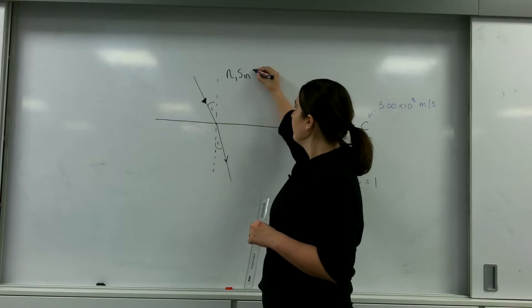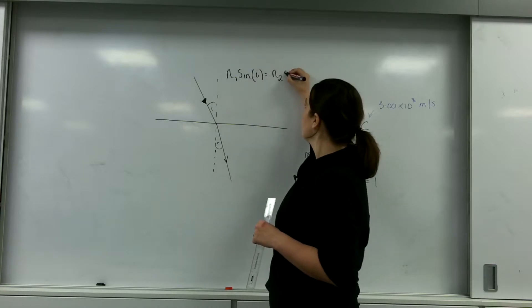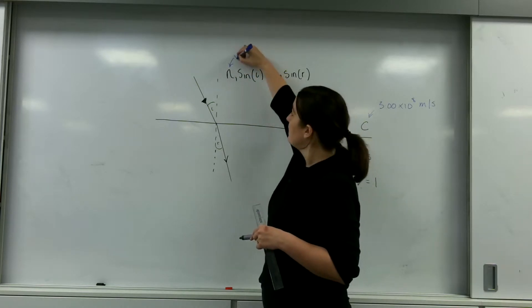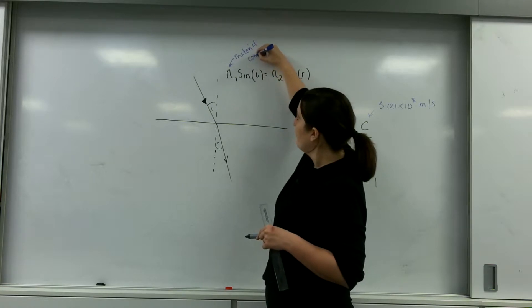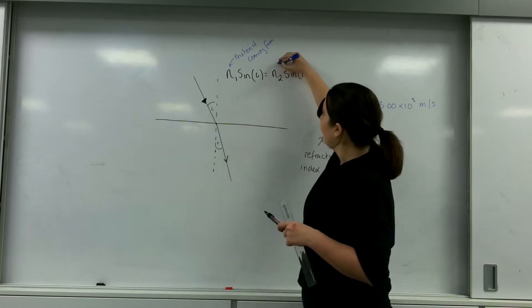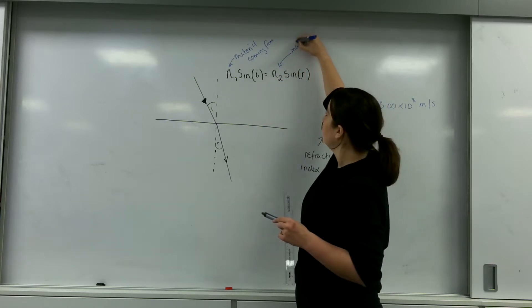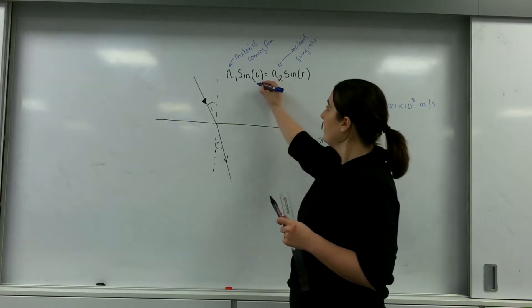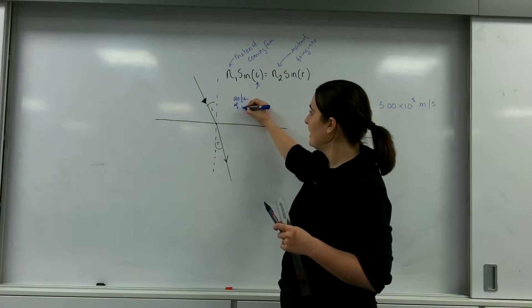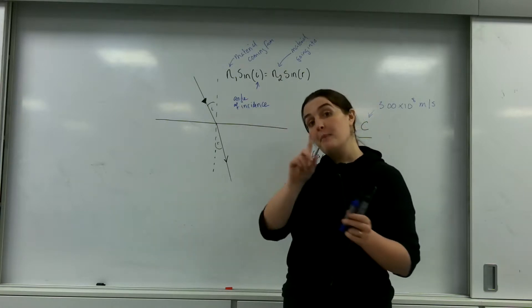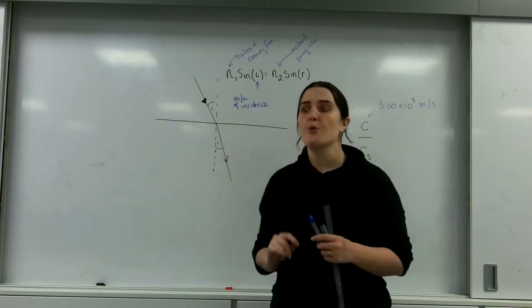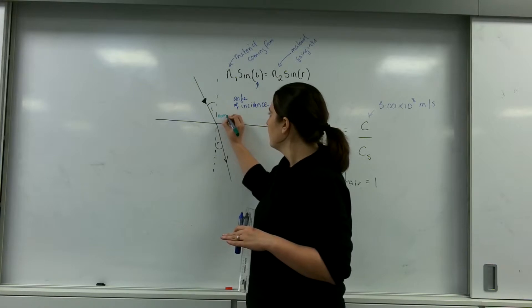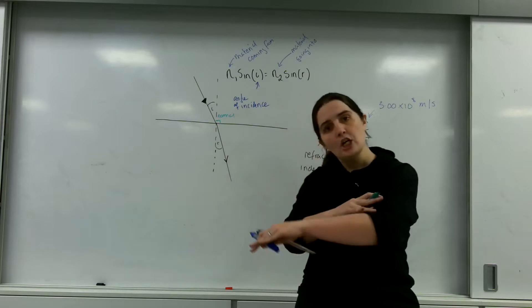N1 sine i equals N2 sine r, where N1 is the refractive index of the material you're going into. i is what is known as the angle of incidence. And we measure that from drawing this line here. This is called the normal line. And anything that you draw, any diagram you draw for refraction, must have a normal line. This normal line is perpendicular to the surface.